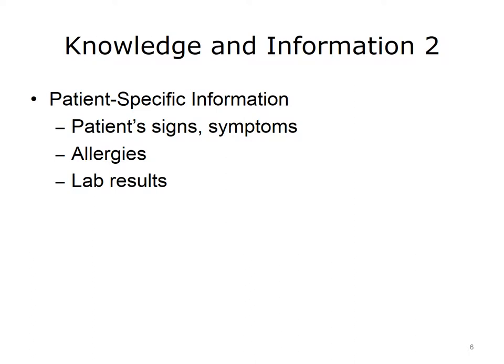Patient-specific information includes the unique information for the given patient. It might include the particular patient's signs and symptoms. Signs are physical findings that the doctor can observe. Symptoms are what the patient tells the doctor. It can also include allergies and even the results of laboratory tests, among other information. In the future, we are likely to see CDS that can even deal with information on a patient's individual genetic profile. Now that is really patient-specific information.